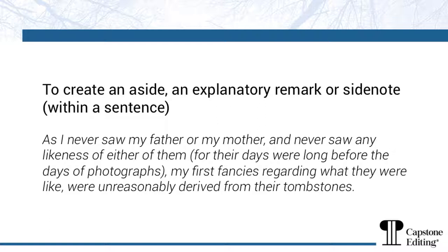In this example taken from Great Expectations, Charles Dickens encloses an aside that clarifies why Pip doesn't have any knowledge of what his parents looked like. You'll notice the comma is placed outside of the parentheses. This is because the section within the parentheses is a side note linked to the dependent clause 'and never saw any likeness of either of them.' Therefore the comma goes at the end of the dependent clause, which is considered to be after the side note within the brackets.